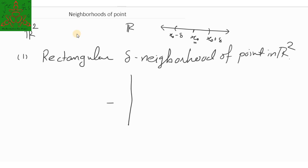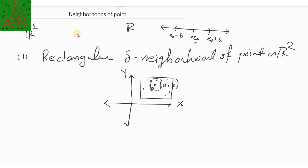In the two-dimensional space, if you have an x-axis and a y-axis and you are given any point in this plane as point (A, B), the neighboring points of (A, B) can be measured in many ways. One way is by surrounding it with a square — whatever points lie inside that square are the neighbors. The neighborhood of a point is denoted N(AB) with radius delta.